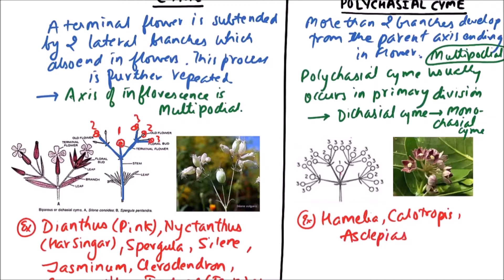Here we can observe that this is the main axis which is ending in a flower. Then more than two branches are there, each ending in a flower. And then again they may show polychasial, dichasial, or monochasial cyme.